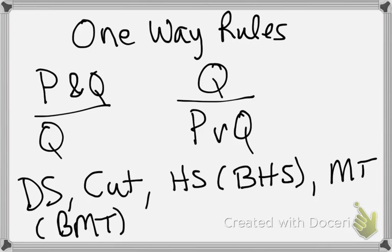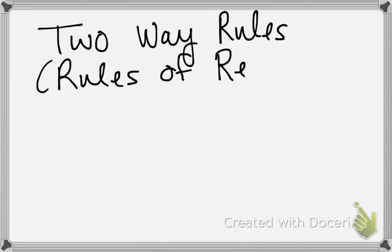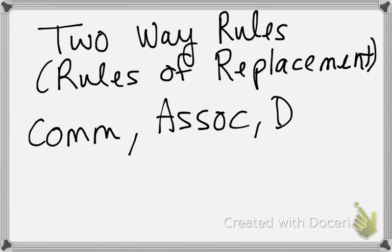Then we have, in the derived rules, we have a bunch of rules that we're going to call two-way rules, or rules of replacement. So rules like the rule of commutativity, associativity, the rule of DeMorgan's, etc. We have quite a number of these rules.